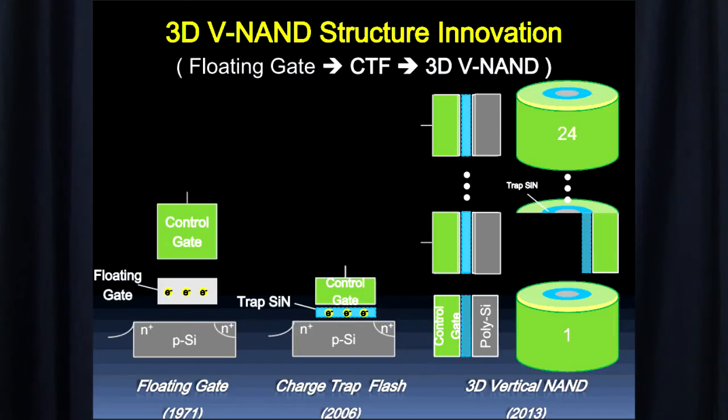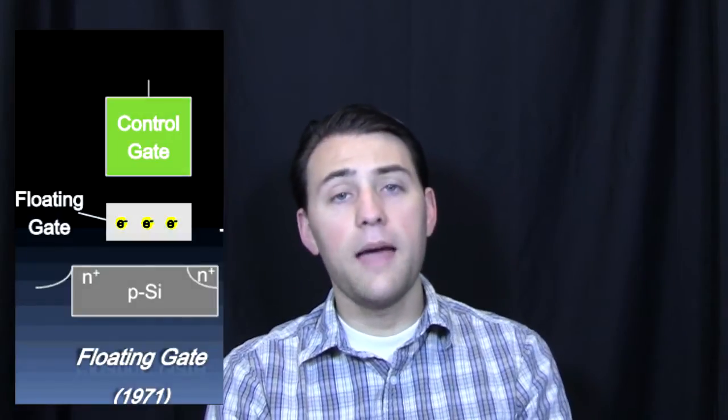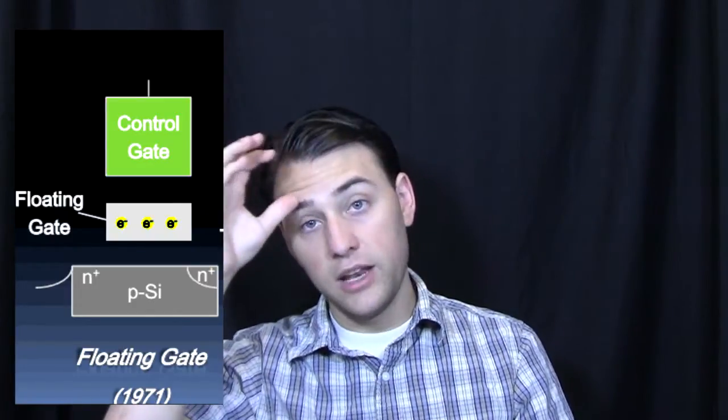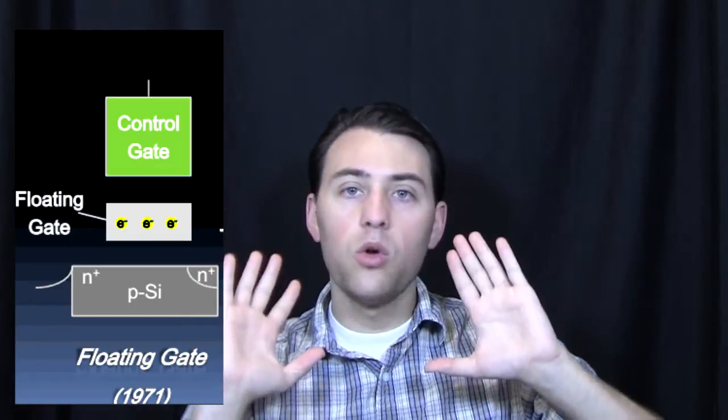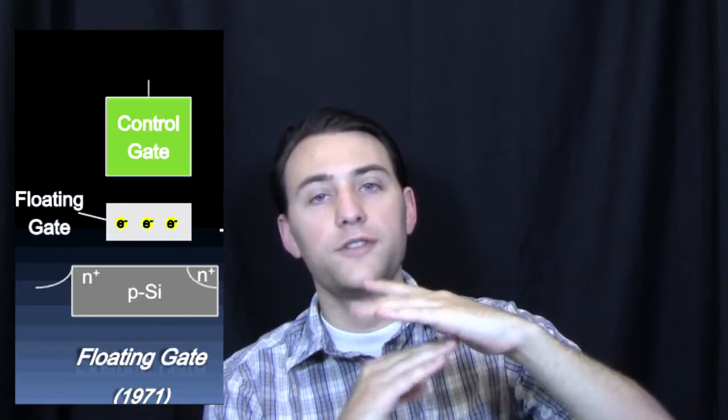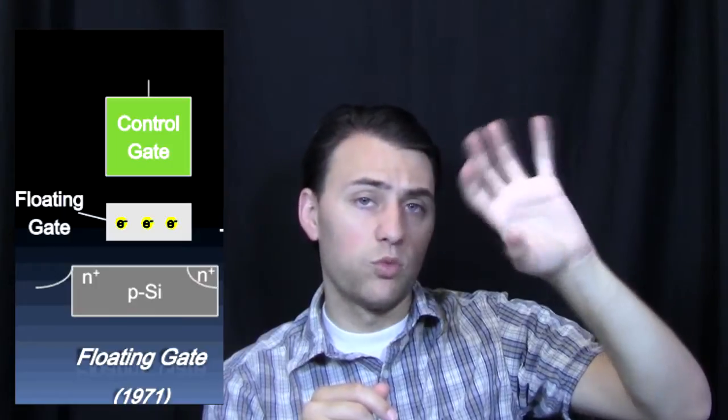We started with floating gate flash. What that meant was that you had a substrate, a floating gate which was not connected to anything, and a control gate on the top. What would happen is, as you charged up the substrate, you would wind up tunneling electrons onto the floating gate. And when you got enough charge built up on the floating gate, it would register — what had previously been a one would now register as a zero. And the control gate on top is what would register the amount of charge on it.